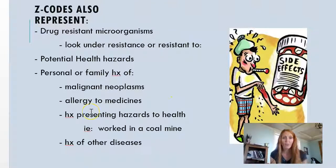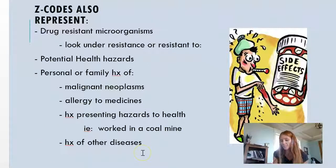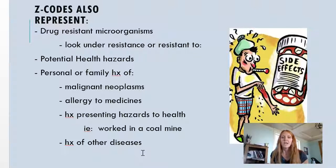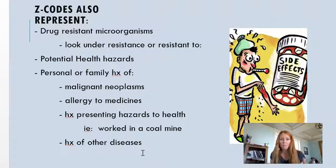We also have histories for allergy to medicines, hazards to health like working in a coal mine, and histories of other diseases like diabetes, chest pain, glaucoma, and kidney diseases — lots of things that a patient's genetics can bring with them. So if a patient's coming in for a breast lump and their mom had breast cancer, that's important. We'd code the regular diagnosis for breast lump and then also code a family history of breast cancer or malignant neoplasm.